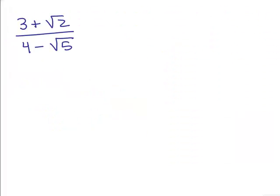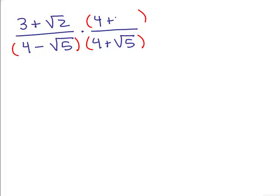Here's another problem: 3 plus square root of 2 over 4 minus square root of 5. Again, we have a binomial in the denominator, so we need to multiply the numerator and denominator by the conjugate. Feel free to pause and try it on your own first. In the denominator, I need to multiply by 4 plus square root of 5 to get a rational number. But that means I need to also multiply it in the numerator. Since there's a 3 plus square root of 2 on top, put parentheses around that — you're going to have to do the FOIL method for the numerator.